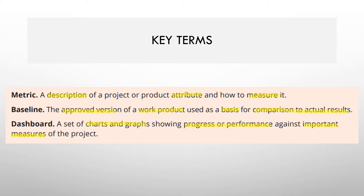All four desired outcomes are very important. Now let's look at the key terms for this domain. First is the metric — a description of a project or product attribute and how to measure it. For example, defect containment measures internal versus customer defects to understand leakage. The second term is baseline — the approved version of a work product such as schedule or budget, used as a basis for comparing actuals. The third key term is dashboard — a set of charts and graphs showing progress and performance.